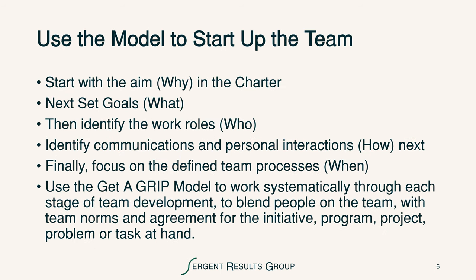When we start up the design team, we use the model. We start with the aim and the charter, set goals as a team with the guiding council, identify the work roles — who will do what on the team — not just these five roles but the rest of the work that needs to be done. We identify the communications and personal interactions next, and finally focus on the defined team processes. We use the get-a-grip model to work systematically through each stage of team development, blending the people on the team with team norms unique to that team and agreement by team members for the initiative, program, project, problem, or task at hand. It's also important to make sure that the sponsoring guiding council agrees with the recommendations of that team.